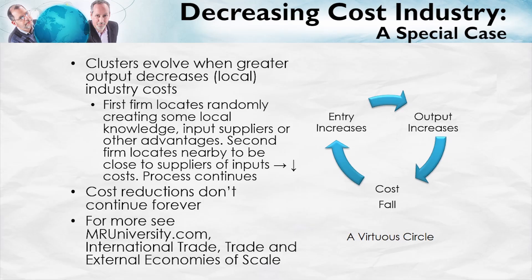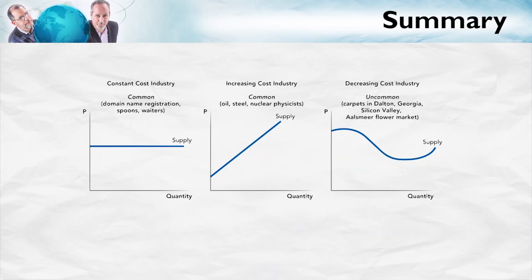Let's sum up. In this chapter, we've really done two things. First, based upon profit maximization and a firm's cost curves, we've shown how a firm decides how much to produce and also when to enter or exit an industry. Second, based upon those production decisions, we've shown how a supply curve is built up, founded upon the choices of firms in entering and exiting and how much to produce. We've looked at three particular cases. The constant cost industry — with examples like domain name registration, spoons, waiters, or rutabagas — has a flat supply curve, because costs don't change as output of the industry changes.